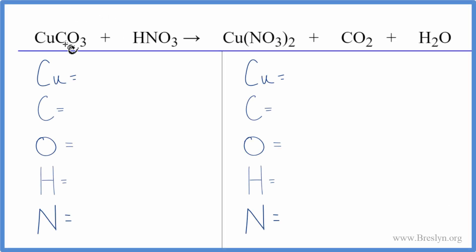In this equation we have copper two carbonate plus nitric acid. So to balance it, let's count the atoms up on each side of the equation.